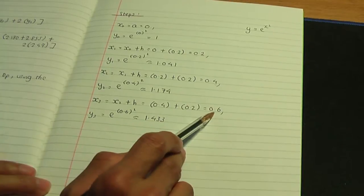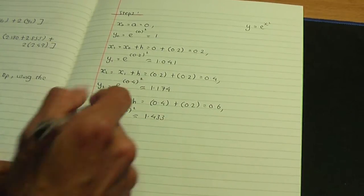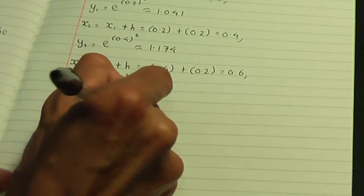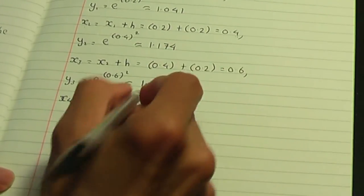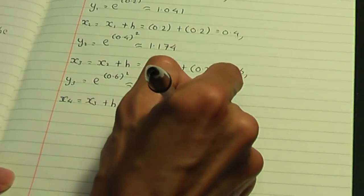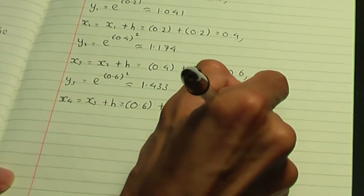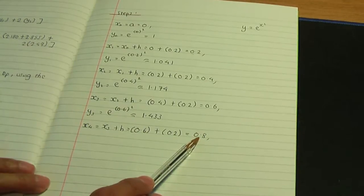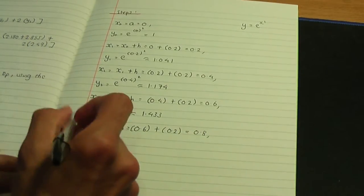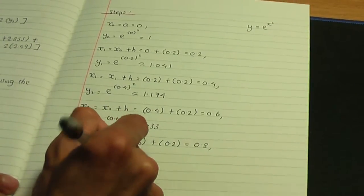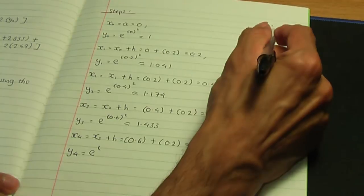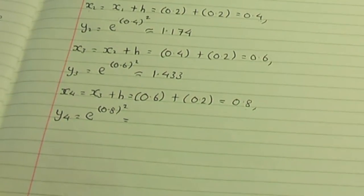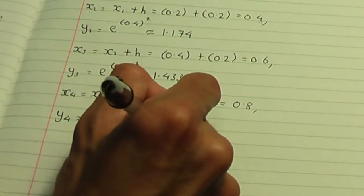We're not quite at the value of b, which is 0.8, so one more. x4 equals x3 plus h: 0.6 plus 0.2 gives 0.8. This is where we stop calculating further x values because we've reached x equals b. y4 equals e to the power of 0.8 squared — don't forget to square — which works out to be 1.896.